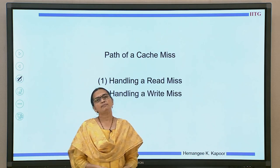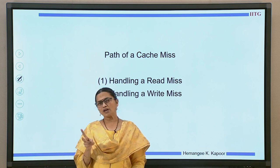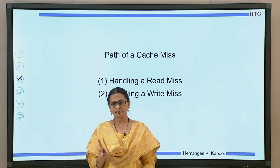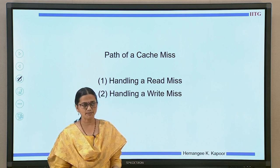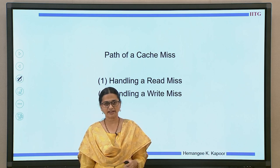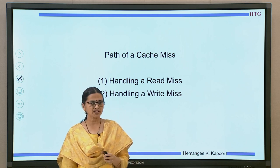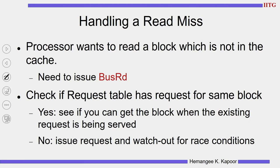The topic to discuss is the path of a cache miss. There are two types of misses: handling a read miss and a write miss. We will start with a read miss. A read miss means that the processor wants to read the block and the block is not there in the cache.